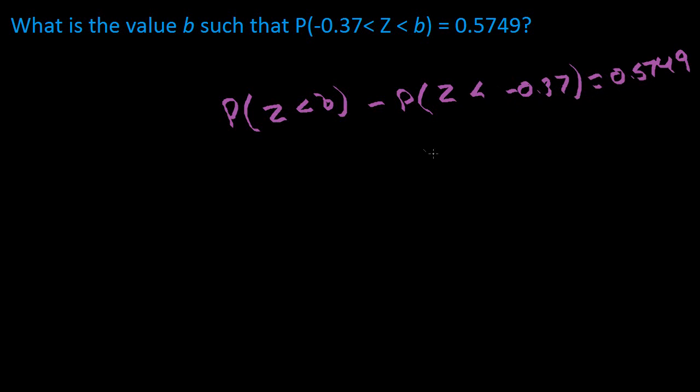The next step is going to be to rearrange this question to isolate B, to isolate this probability right here. So we're going to have probability of Z being less than B is going to be equal to 0.5749, add the probability of Z being less than negative 0.37.